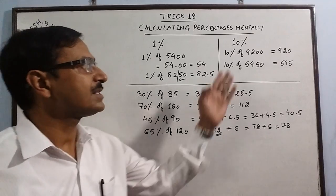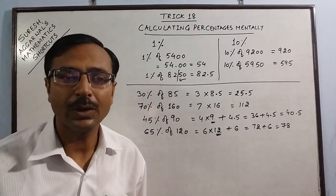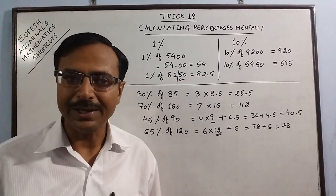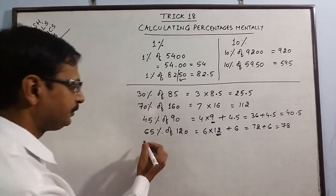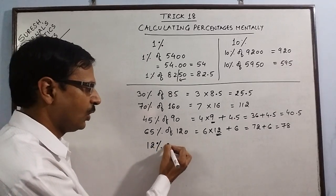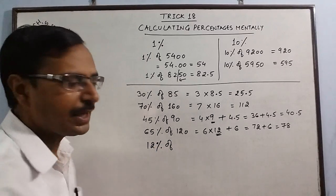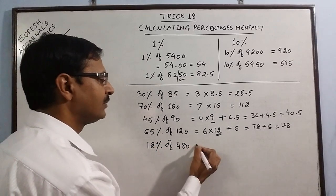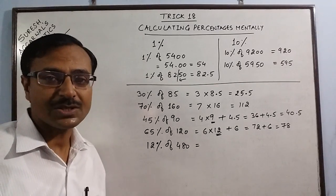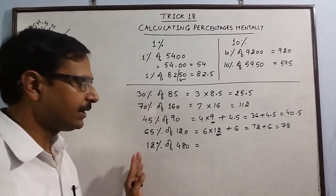Similarly, when you use the concept of 1%, you can calculate 11%, 12%, 13% of any quantity. Say we will have one more example. Suppose we need to calculate 12% of any quantity. Say if the quantity I am taking is 480, 12% of 480. Now I don't see 12% as 12%, I calculate 10%